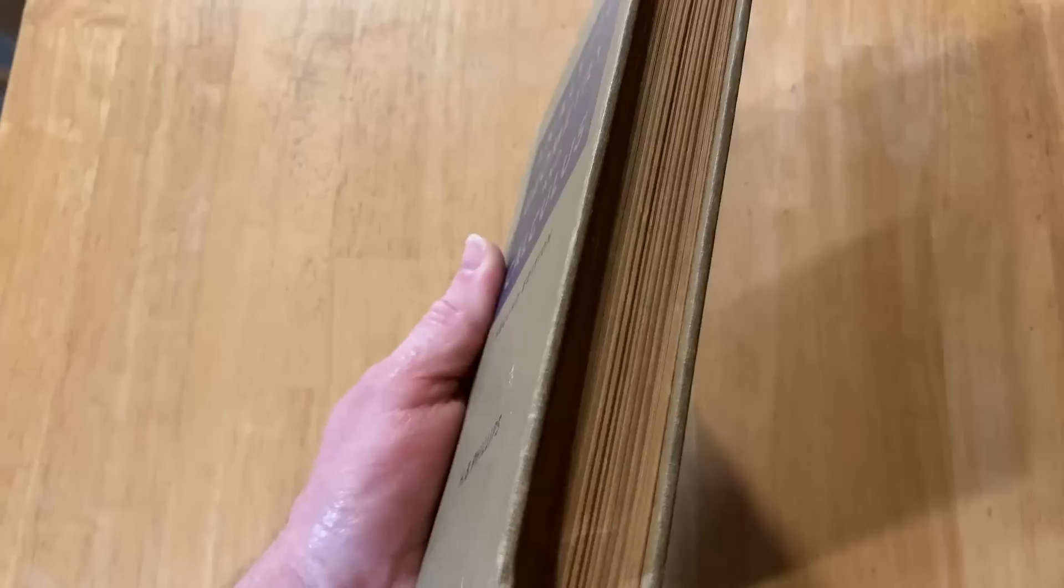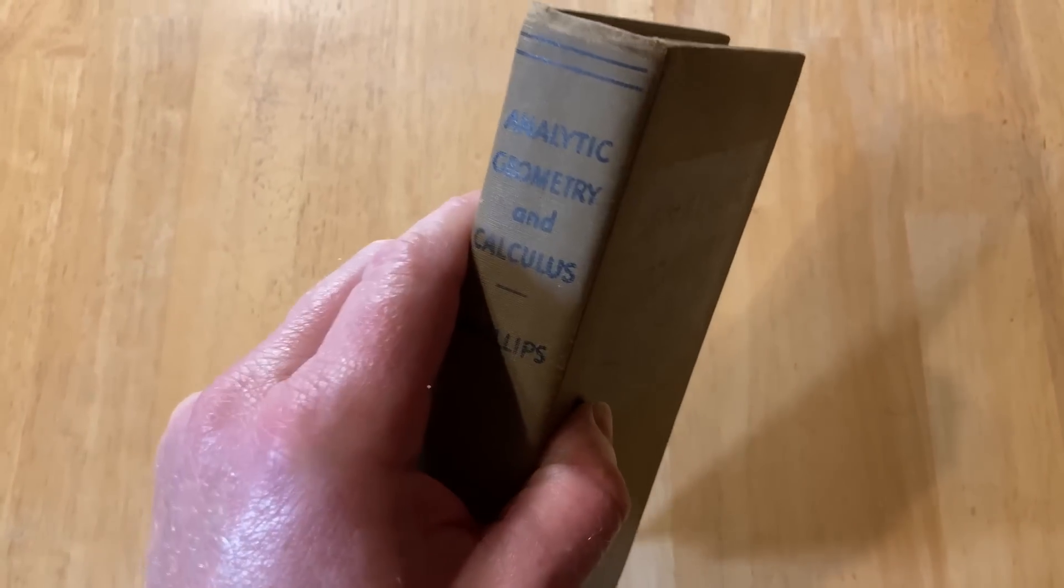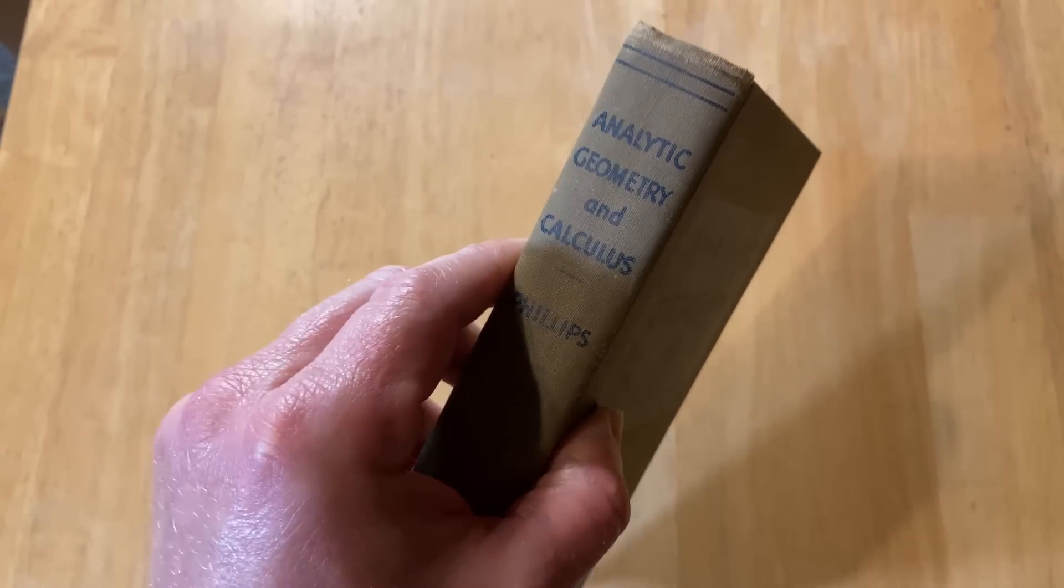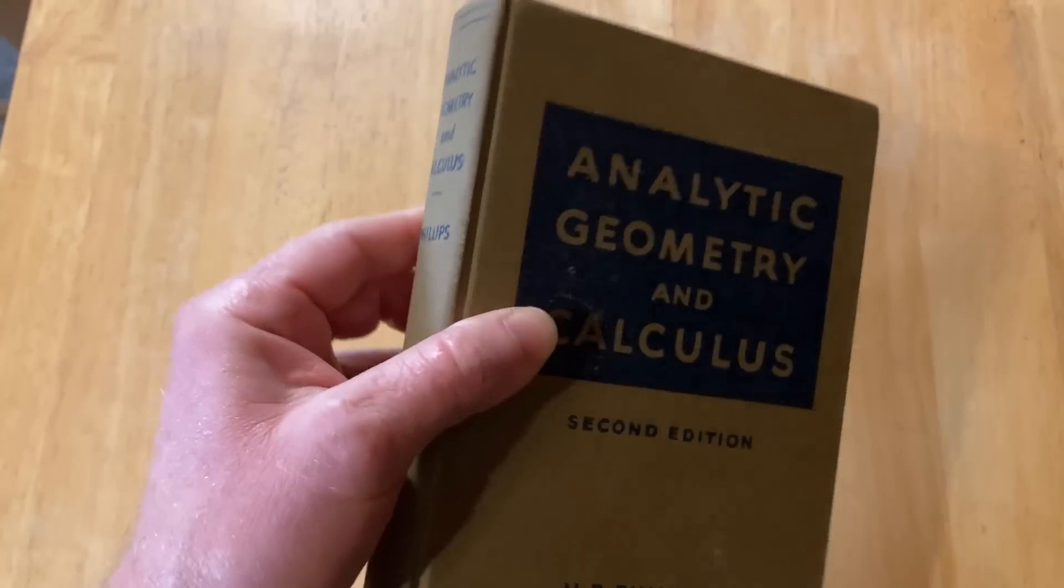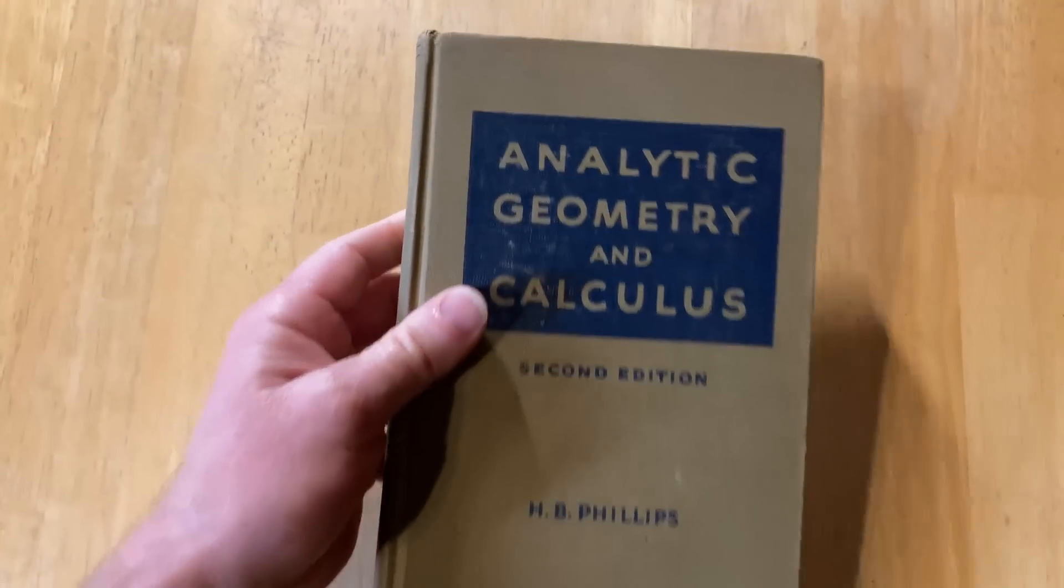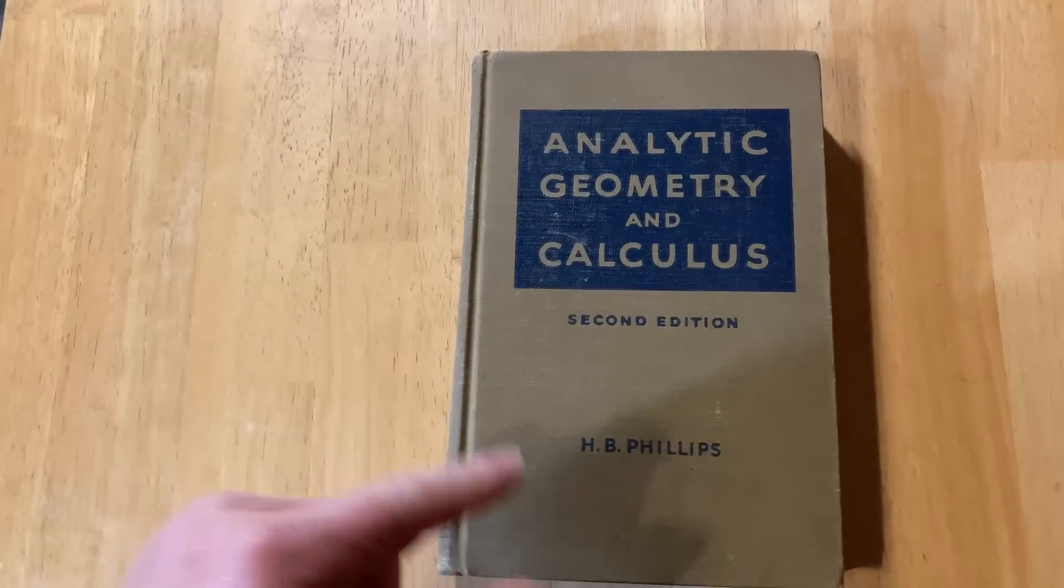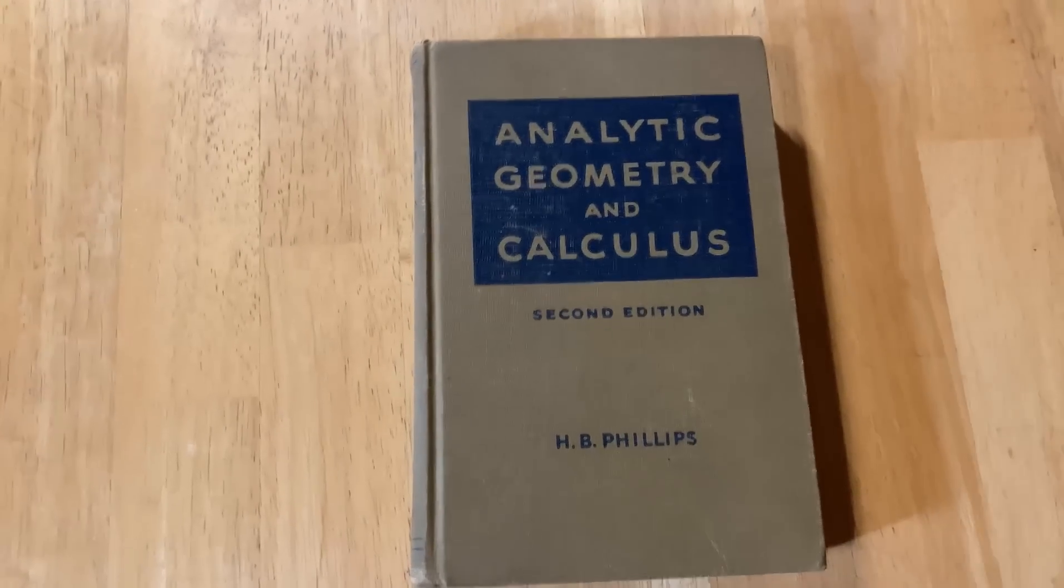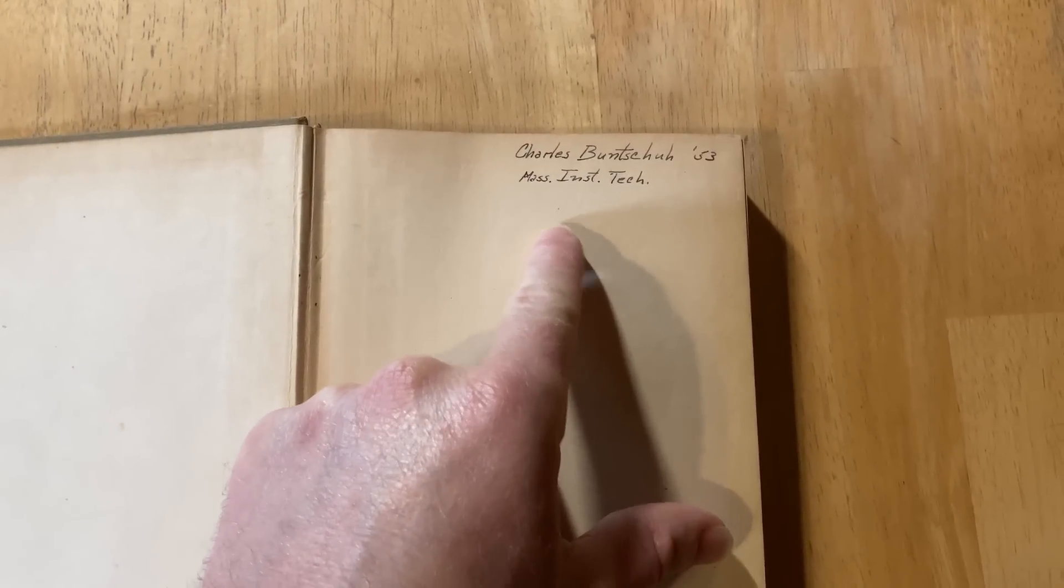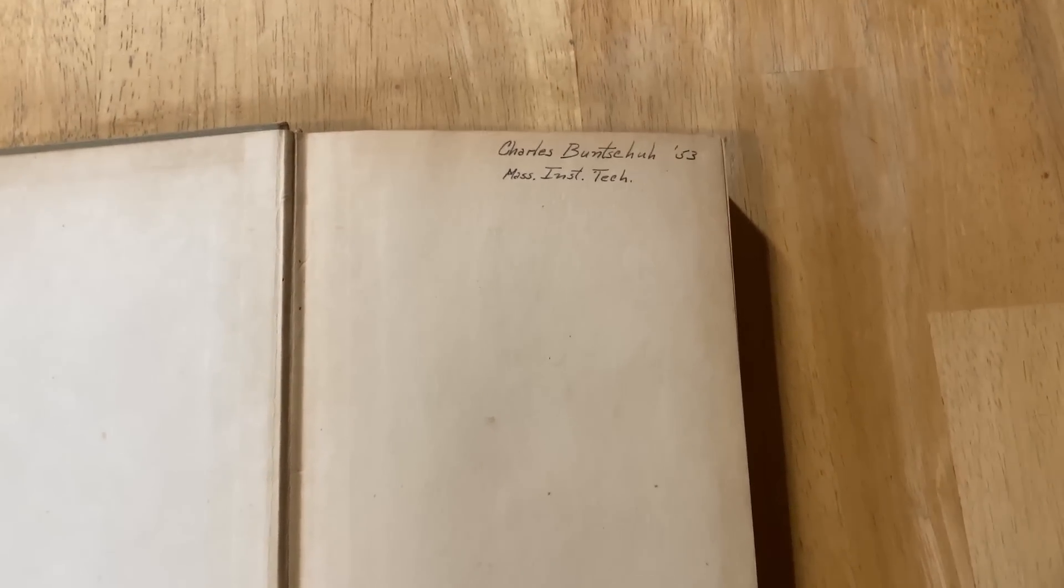Another really cool thing about this book is that it's 100% free. You can find it on the internet for free, and I will leave links in the description to a free version as well as a physical version in case you want to buy it like I did. Another really cool thing is that it has answers to every single problem, or almost every single problem, in the back of the book. On the inside cover, you can see someone's name was written here, and this person used this book at MIT in 1953. I think that's really, really cool.